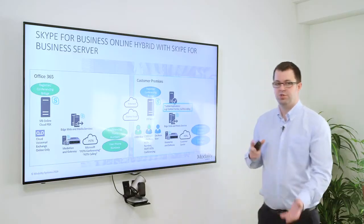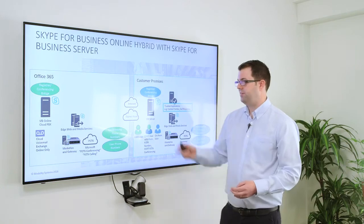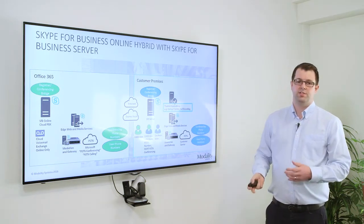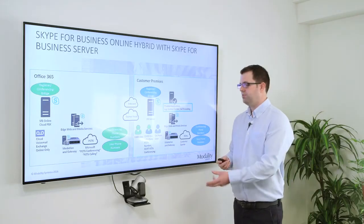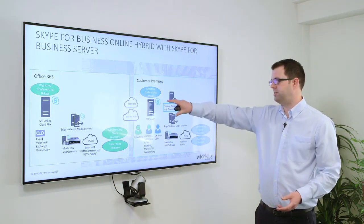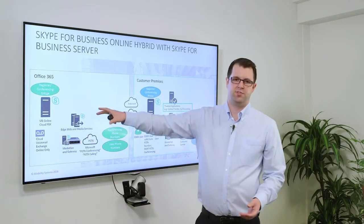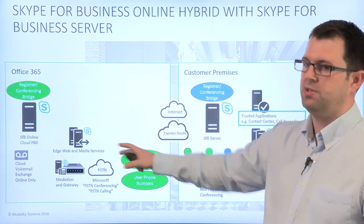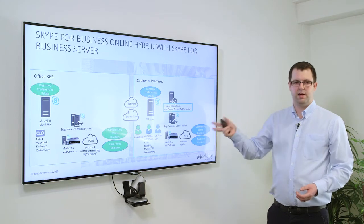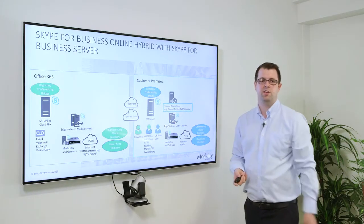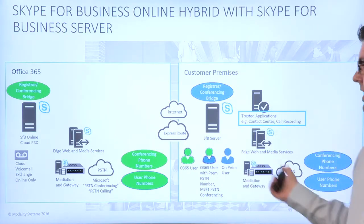The final model mixes the traditional server world and the new cloud world. Some users are in Office 365 getting all their services from there, and some users run on Skype for Business Server — generally referred to as hybrid or server hybrid. Rather than using Cloud Connector Edition, we're using a fully fledged Skype for Business Server to handle PSTN break-in and break-out for the Office 365 users, while also having some users homed exclusively on server. The benefit is taking advantage of Office 365 and Skype for Business Online where it makes sense, while keeping users on server for requirements that don't fit the cloud today — such as call recording or contact centre — which aren't yet in Skype for Business Online but are available on server. Your remaining knowledge workers go into Office 365 Cloud, and they all work seamlessly together.